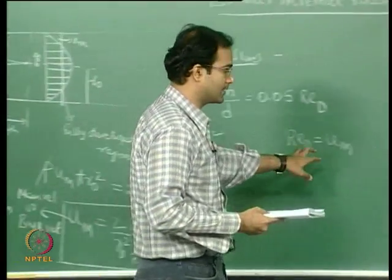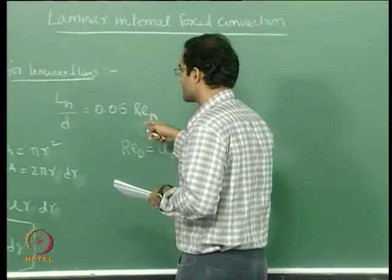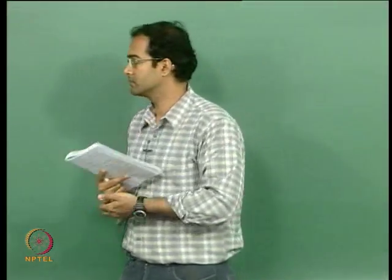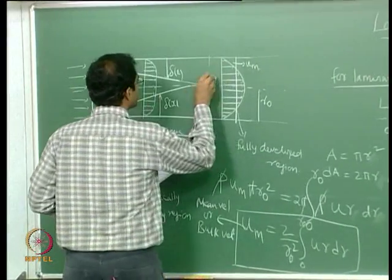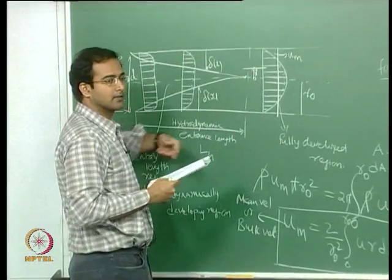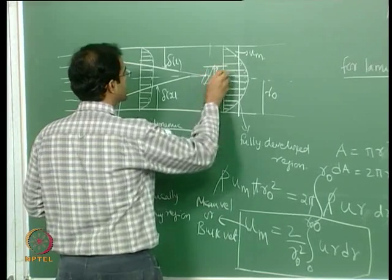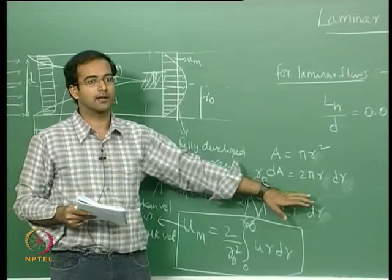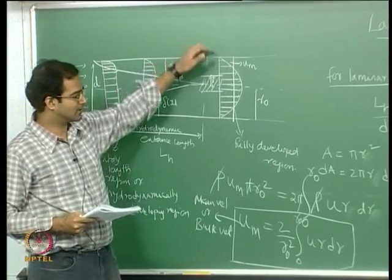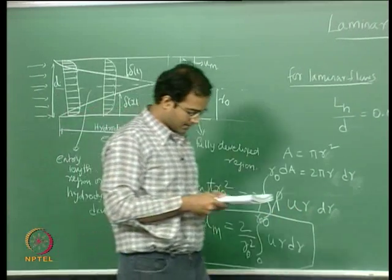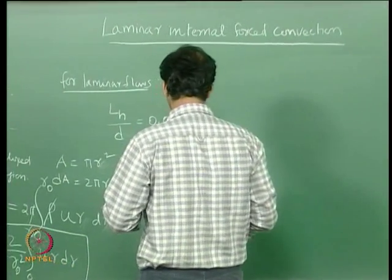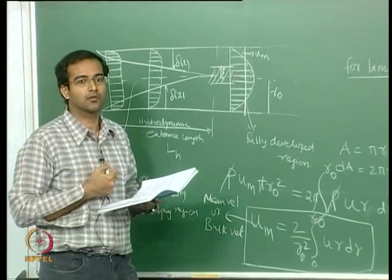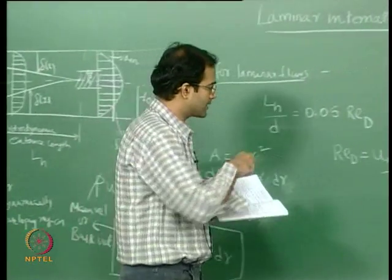Based on the Reynolds number you can classify the flow as laminar or turbulent. For duct flows or flow between parallel plates the critical Reynolds number for transition to turbulence is approximately Re_critical ≈ 2300. This is an approximate value — the flow does not necessarily become turbulent exactly at 2300. If Re < Re_critical the flow is classified as laminar; otherwise it may be in a transition or turbulent regime.